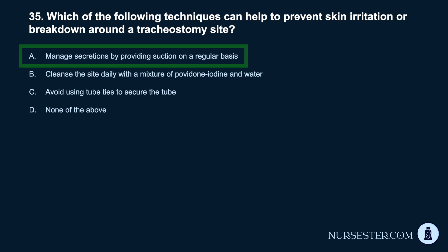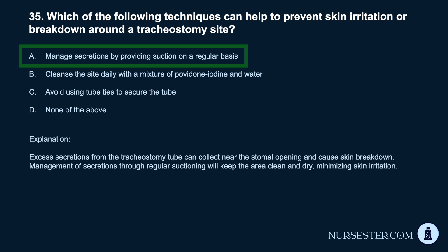Correct answer: A. Manage secretions by providing suction on a regular basis. Excess secretions from the tracheostomy tube can collect near the stomal opening and cause skin breakdown. Management of secretions through regular suctioning will keep the area clean and dry, minimizing skin irritation.